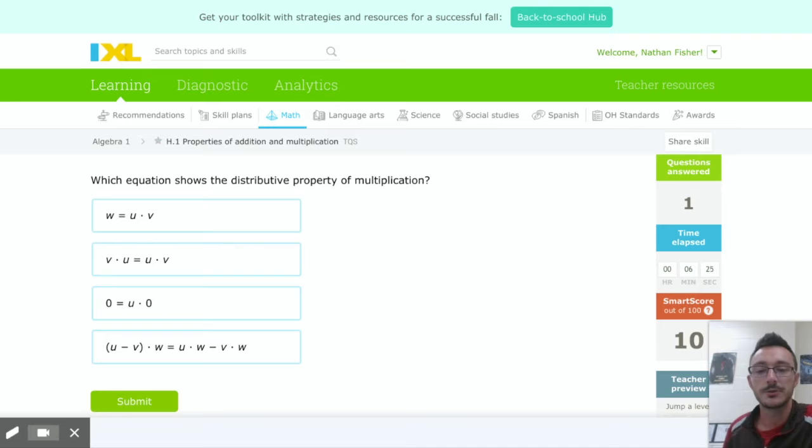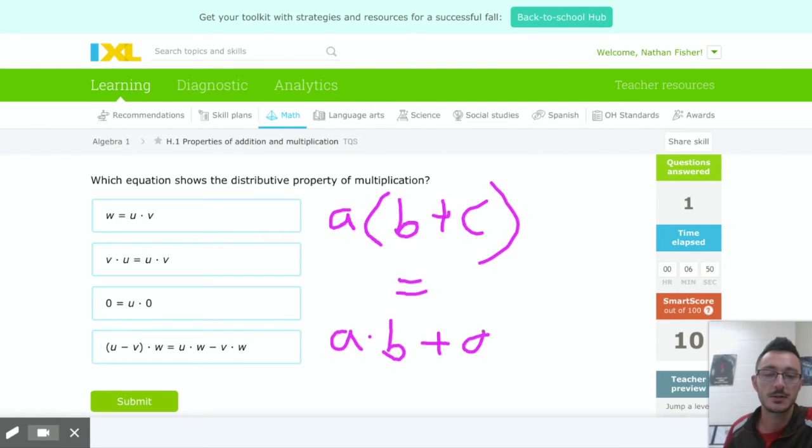Basically what distribution is, or the distributive property, is some number, we'll say a, times a second number plus a third number. That's the same as individually multiplying the first number times each of those and adding it together. So multiplying a times the group of b plus c is the same thing as multiplying a and b and adding that to multiplying a and c together.